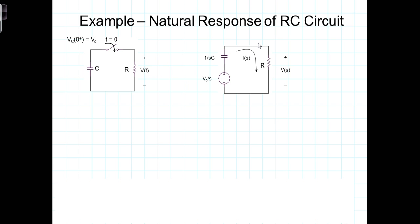To analyze this, it's pretty straightforward. We know that the current here, I of S, is going to equal the voltage divided by the sum of those two series impedances.